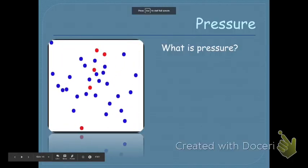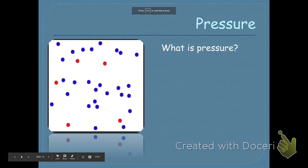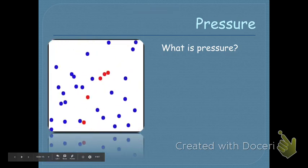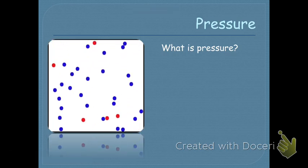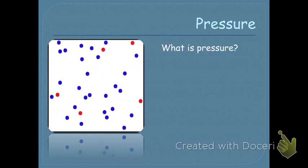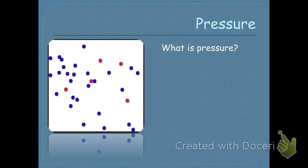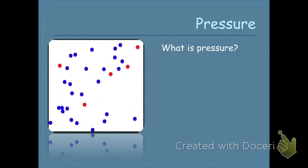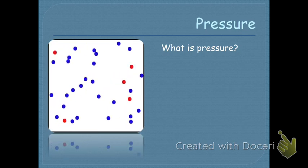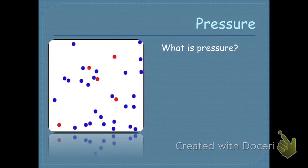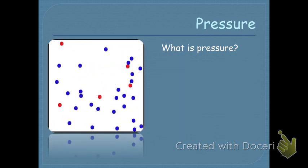Today we're going to talk about pressure, specifically air pressure. Pressure is the number of collisions — so here we have an example of air particles moving, and pressure is just the collisions, it's the number of collisions.